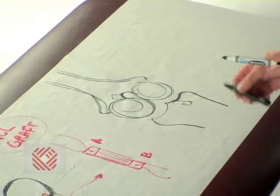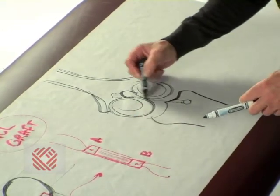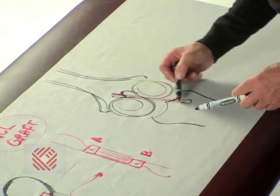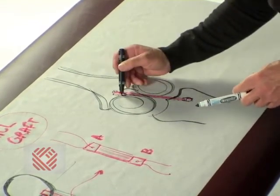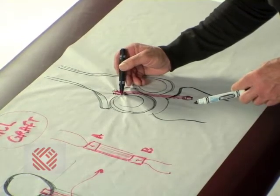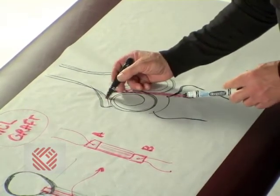So then, we can bring our graft in arthroscopically and it'll end up something like this. Graft, piece of bone in this tunnel, piece of bone in that tunnel.